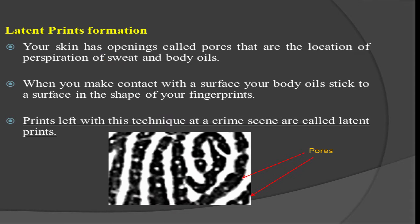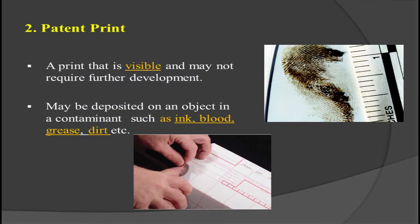Latent print formation: your skin has openings called pores, which are the location of perspiration, sweat, and body oils. When you make contact with a surface, your body oil sticks to the surface in the shape of your fingerprints. Prints left with this technique at a crime scene are called latent prints — they form because of the perspiration of sweat and body oils.